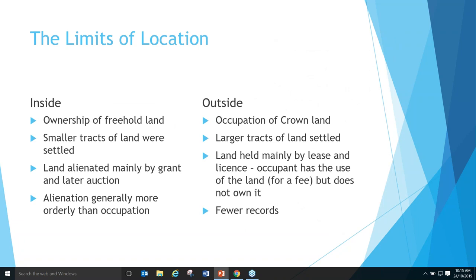Within or inside the limits of location, you could own freehold land. Smaller tracts of land were settled in comparison, and the land was alienated mainly by grants and then later by auction — generally more orderly than the occupation of Crown land. Outside the limits of location, it was always people occupying Crown land, going for bigger portions — thousands of acres rather than hundreds. The land would be held mainly by lease or by licence after they started to regulate it, so the occupant has the use of the land and pays for it but doesn't own it. There are also a lot fewer records about the occupation of Crown land, particularly outside the limits of location, which can be a stumbling block in your research.